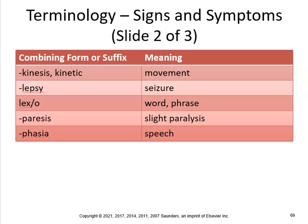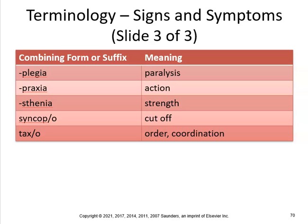Lex means word or phrase — dyslexia is a disorder of reading, writing, and learning. Paresis means partial paralysis — hemiparesis affects one side; a right CVA or stroke causes left hemiparesis because it crosses to the opposite side. Phagia means speech — aphasia is a condition of inability to speak. Plegia is paralysis — paraplegia is paralysis of the lower body; quadriplegia is paralysis of all four limbs. Praxia is action — apraxia is inability to carry out familiar, purposeful movements. Sthenia means strength — neurasthenia is a condition of lack of nerve strength. Syncope means fainting — syncopal pertains to syncope. Ataxia means no muscular coordination.